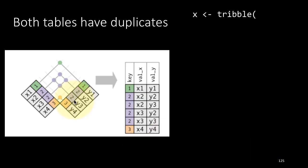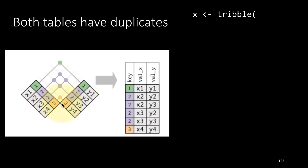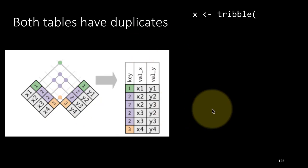Sometimes both tables have duplicates. If key 2 repeats in both tables, there are multiple matches. The 2 in the first table matches both rows with 2 in the second table, and vice versa. So those 2 rows and 2 rows together create 4 rows in the output — x2 y2, x3 y3, x2 y3, and x3 y2 all show up. And x4 y4 also shows up because key 3 is matching. When you have duplicates, the matching works accordingly — drawing connection lines helps visualize all the combinations.